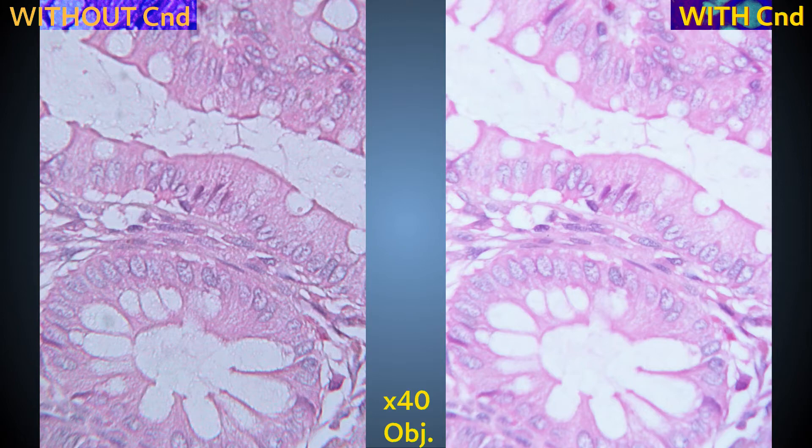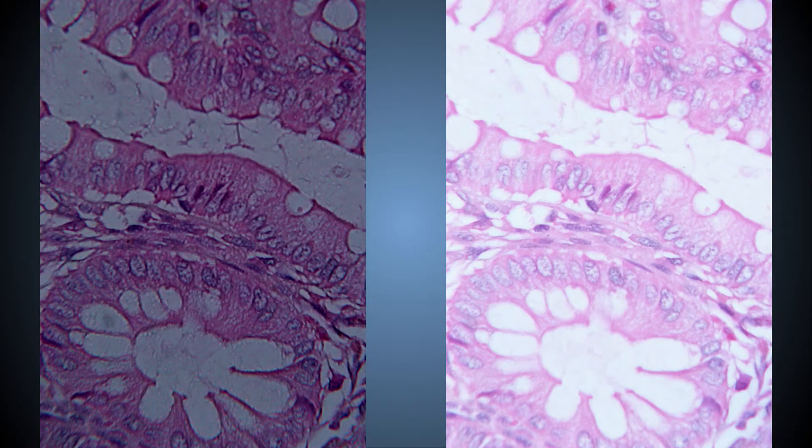Also note that the reduced brightness that comes without a condenser is not fully appreciated here because the camera that took these photos compensated for absolute brightness with automatic gain. This image shows you a more faithful representation of what you would see if you were to look down the microscope by eye.